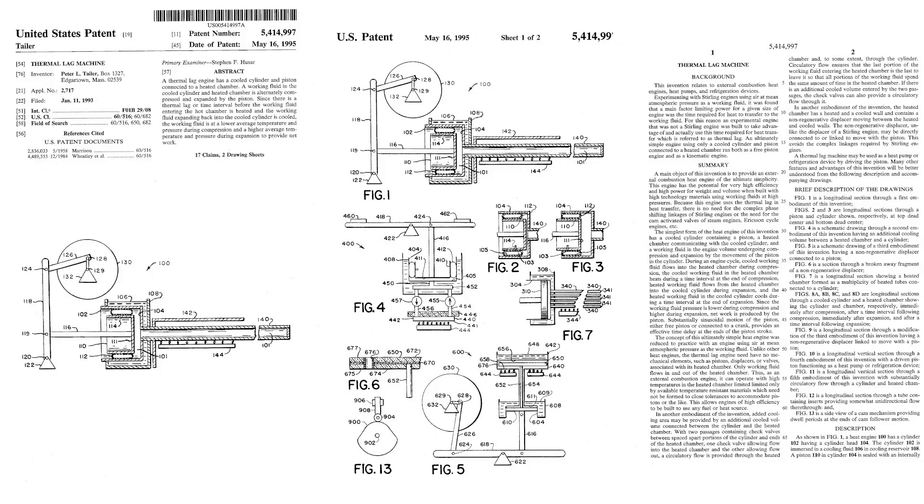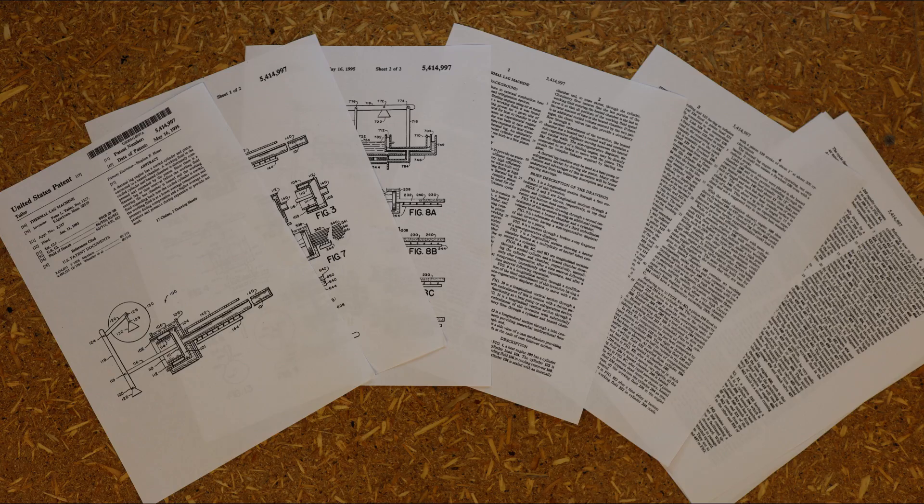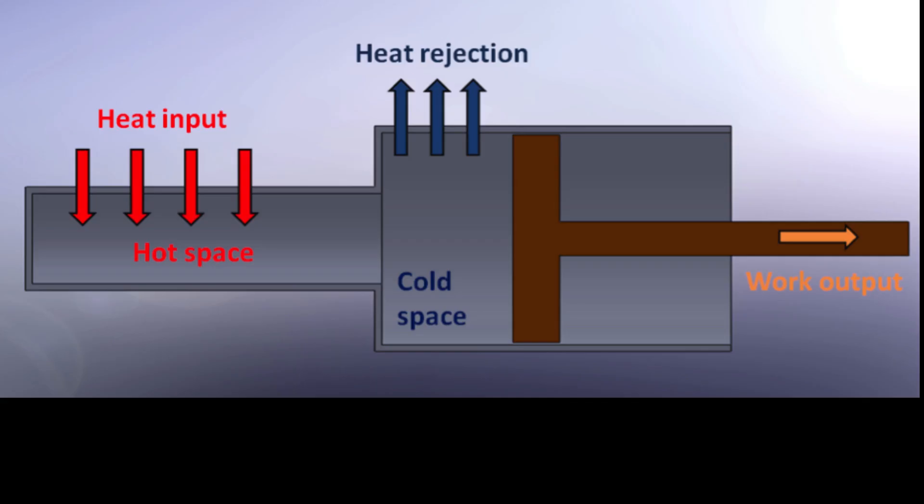The thermal lag engine was patented in 1995 by Peter Taylor. It consists of a hot space where the heat is supplied to power the engine and a cooled cylinder in which the piston moves.